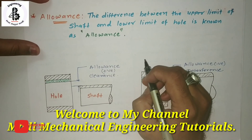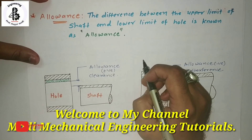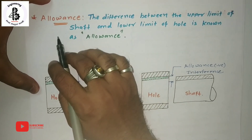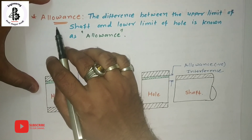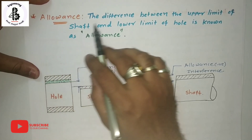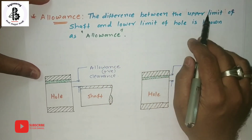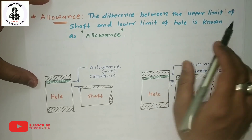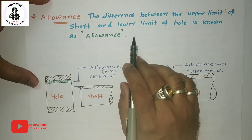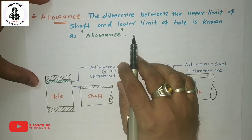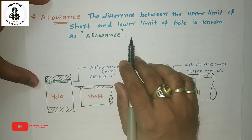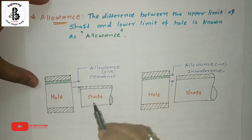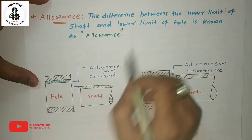Welcome to my YouTube channel Modi Mechanical Engineering Tutorials. In this video I would like to explain about an important part of measurements, production, and manufacturing — that is allowances. Basically, the difference between the upper limit of the shaft and the lower limit of the hole is known as allowance. In my previous lectures I already explained clearance fit, transition fit, and interference fit. Now another important point is how allowances differ from fits.